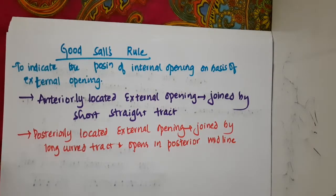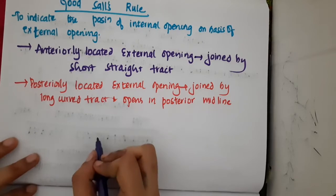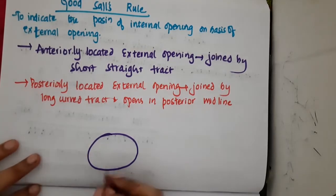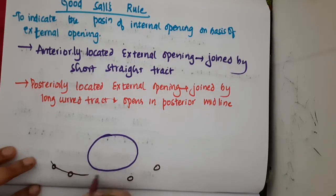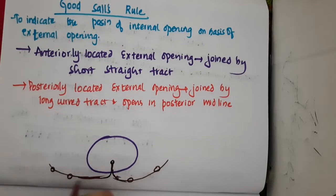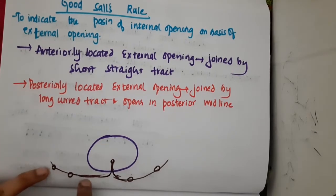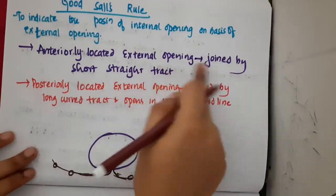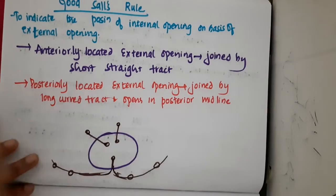To illustrate: if you consider the anus, all posteriorly located external openings join together by a long curved tract and open in the midline. Anteriorly located external openings are joined by short straight tracts and open directly. This is Goodsall's rule.